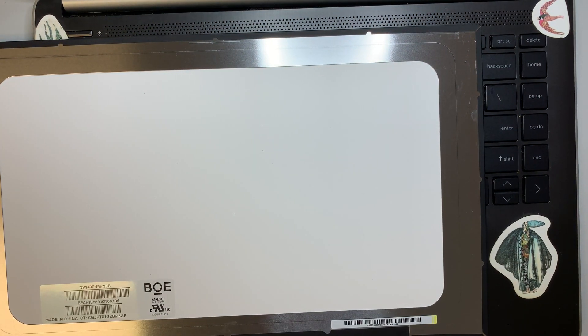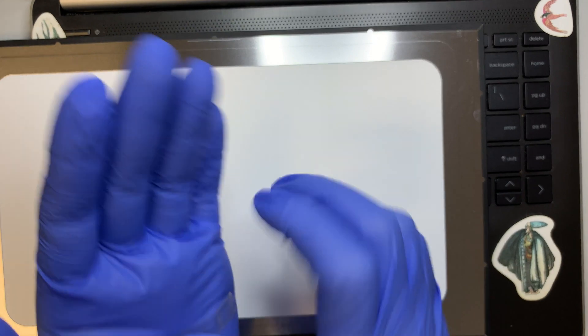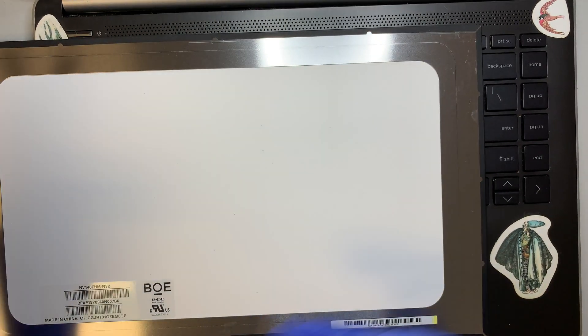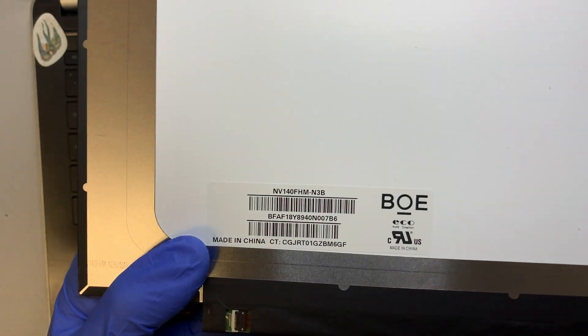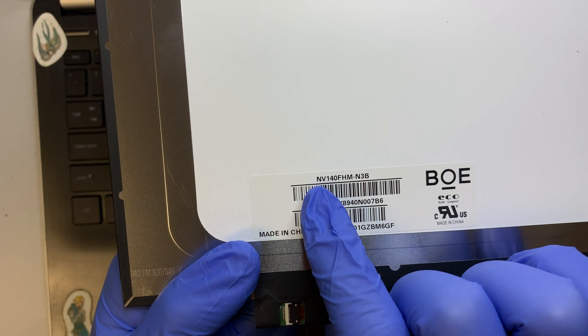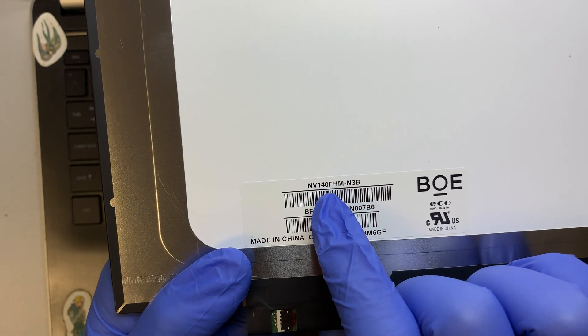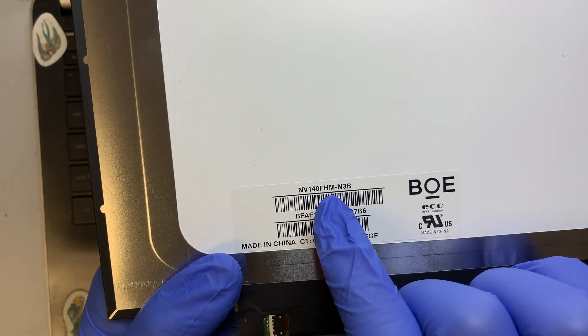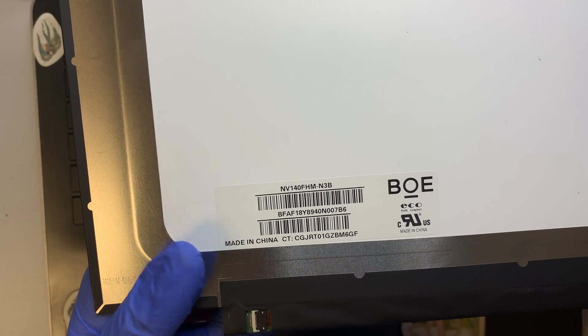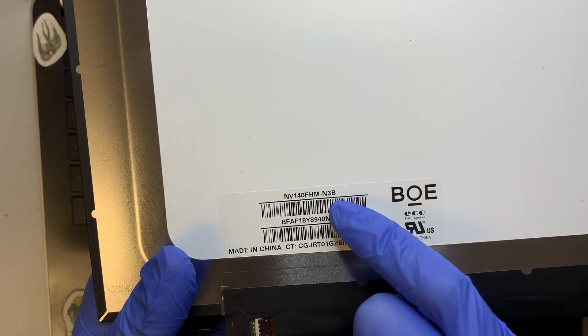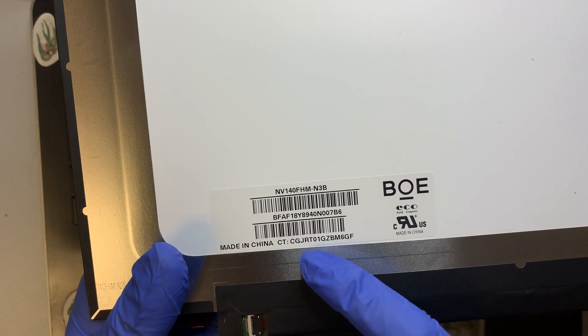The next part is I need to explain to you where you can find the screen from. For my case, my model here is NV140FHM-N3B. Look it up for this model here, or maybe this here, and try to get a replacement.